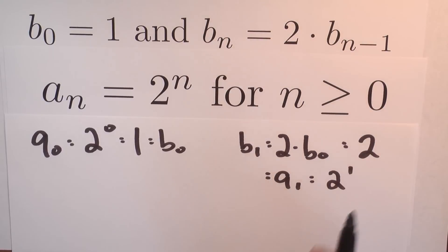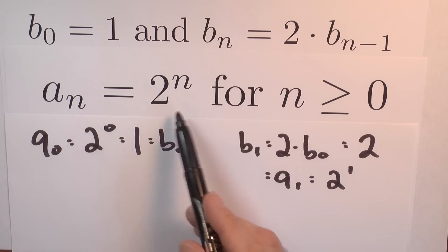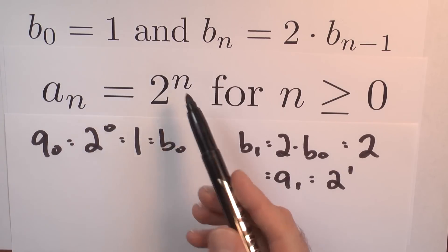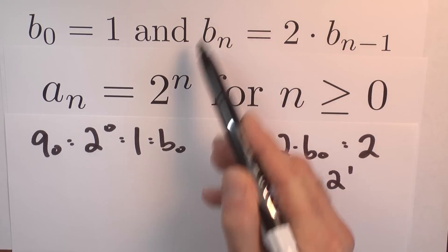And that pattern continues. These two sequences both start with a 0 term, and each term of A sub n is twice the preceding term, which is exactly the recursive definition that I'm giving for B. So A sub 1,000 equals B sub 1,000.